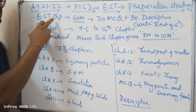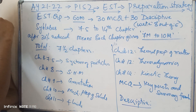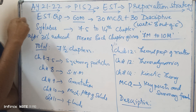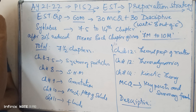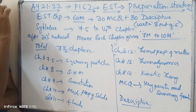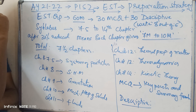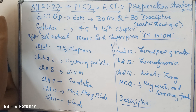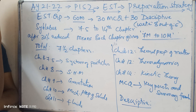First of all, our EST question paper consists of 60 marks total, of which 30 are meant for MCQ questions. It is purely MCQ only this time — no fill in the blanks, no match the following. Out of 30 marks, the MCQ questions have four options and we need to choose the best one. The remaining 30 marks are for descriptive — we have to write three answers out of six questions given.